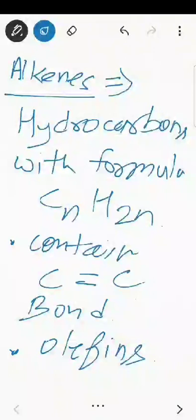Good morning students. In today's lecture we are going to discuss about alkenes and their methods of preparation. Alkenes are basically hydrocarbons with general formula CₙH₂ₙ and they contain a carbon-carbon double bond. They are also known as olefins, and due to the carbon-carbon double bond they have unsaturation in the molecule.